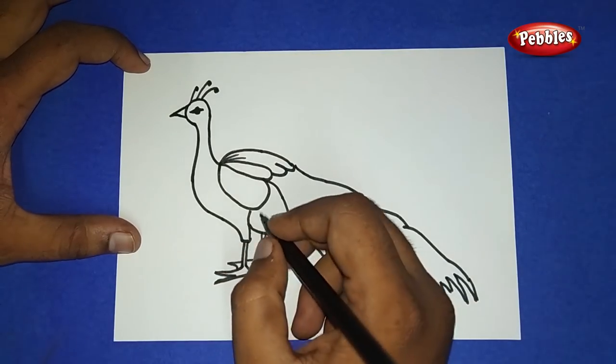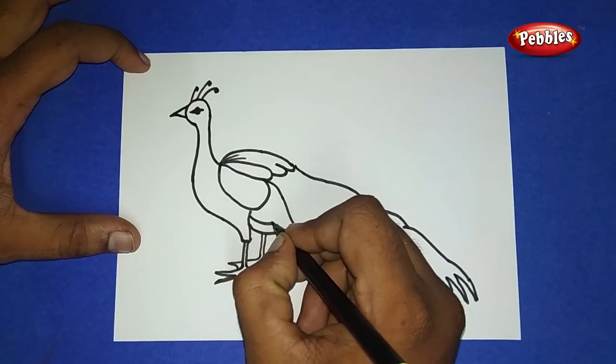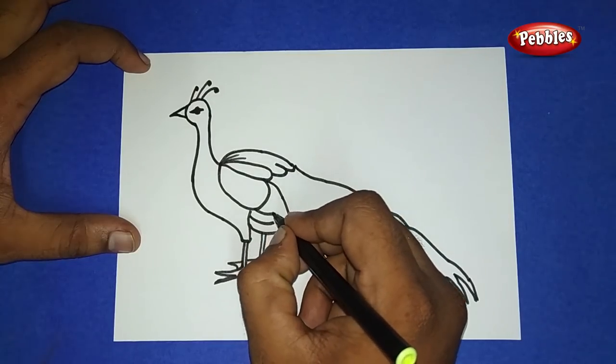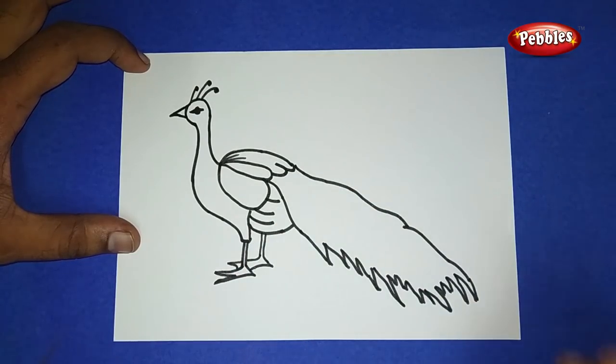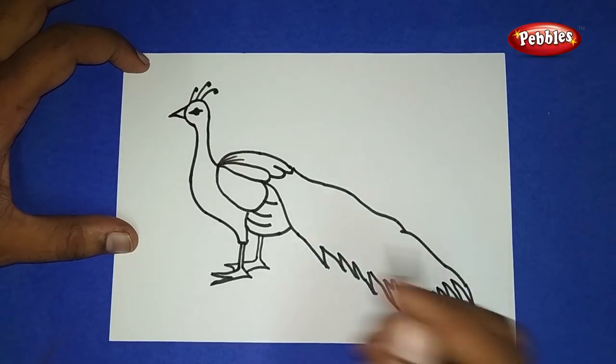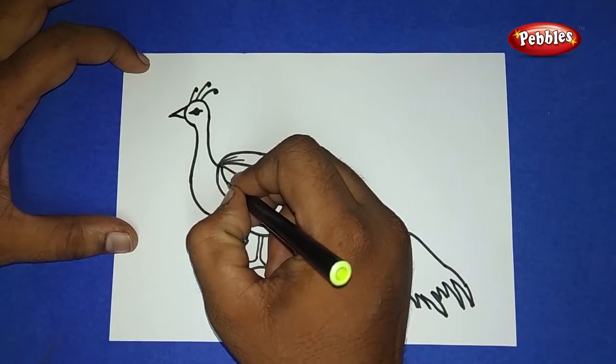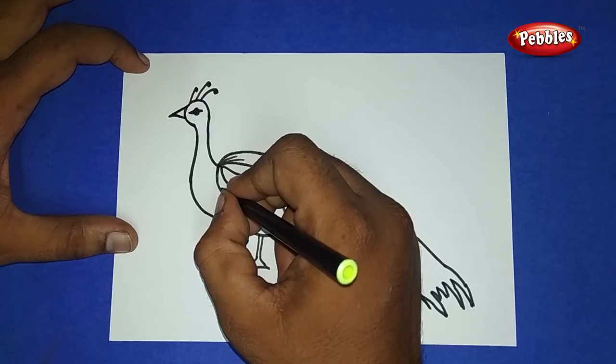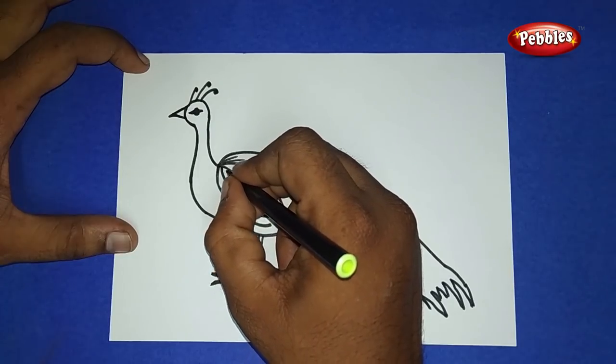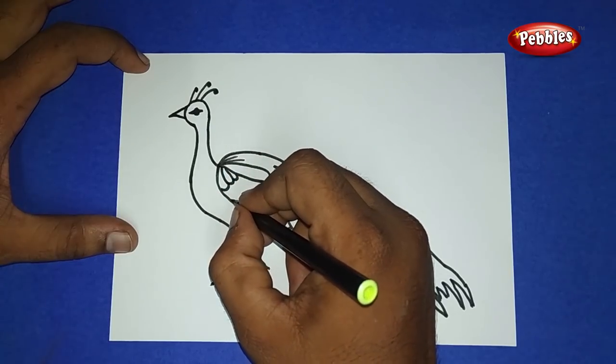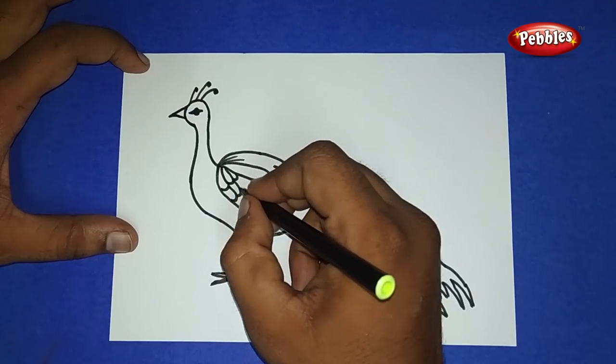Inside a feather, draw small lines like this in the body part. Draw like this only to decorate a peacock's body.